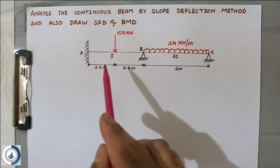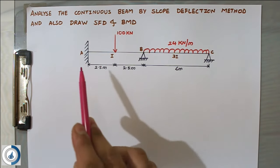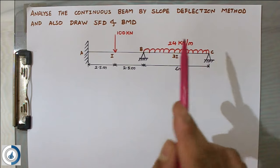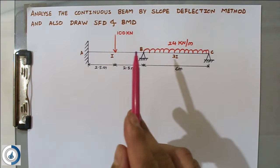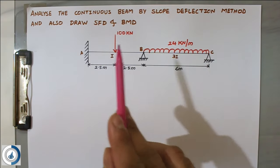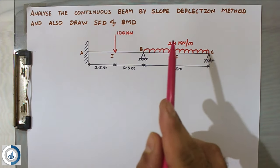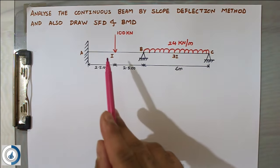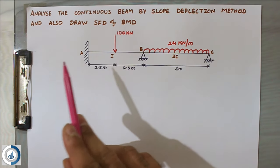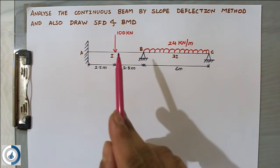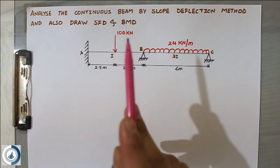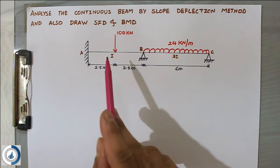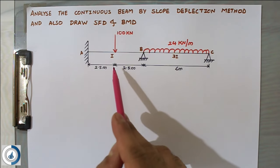This is a continuous beam having two spans. End A is fixed and C is hinged. In this beam there are two types of loading: one is a point load and another is a uniformly distributed load (UDL). In our previous problem the beam had entire UDL of different intensity, whereas in this problem there is a point load acting at the center of the span.